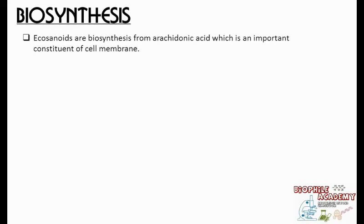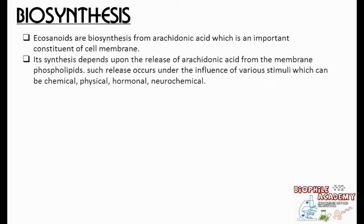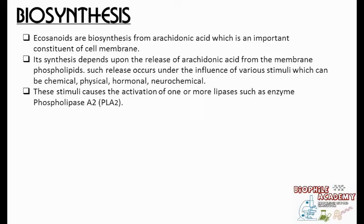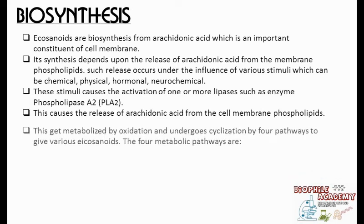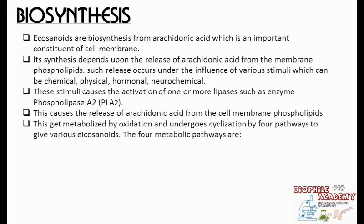Now let's move on to the biosynthesis of prostaglandins. Eicosanoids are biosynthesized from arachidonic acid, an important constituent of cell membranes. Its biosynthesis depends upon the rate of release of arachidonic acid from the membrane phospholipids. Such release occurs under the influence of various stimuli which can be chemical, hormonal, neurochemical, and physical. These stimuli cause the activation of acyl lipases such as the enzyme phospholipase A2, which in turn mediates the release of arachidonic acid from the membrane phospholipids. Arachidonic acid released from membrane phospholipids is metabolized by oxidation and undergoes cyclization by four pathways to give various eicosanoids, such as prostaglandins, leukotrienes, and isoprostanes.